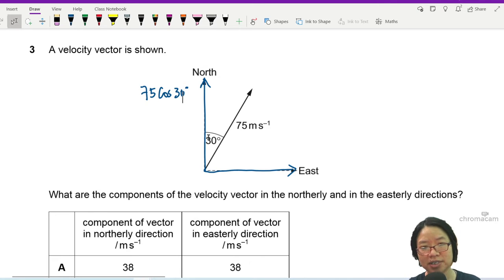So cos 30 is the length of this vertical blue arrow divided by 75, and this one would be 75 sine 30 because it's opposite the angle.